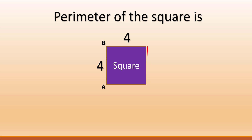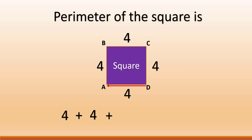AB is 4, BC is also 4, and CD is also 4, because all sides of a square are equal. So four plus four plus four plus four equals 16. The perimeter of the square — the sum of all sides — is 16.